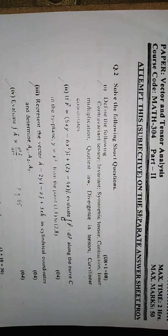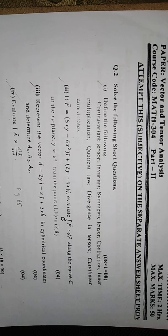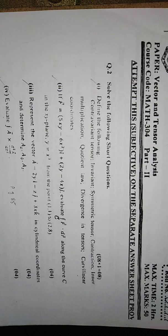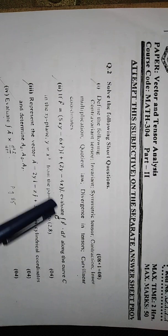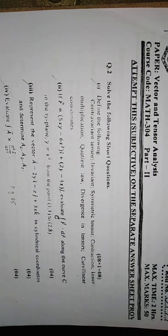The first short question is define the following. Here we have 8 definitions. This will also be found in your book. The first definition is contravariant tensor, invariant, symmetric tensor, contraction, inner multiplication, quotient law, divergence in tensor, and curvilinear coordinates.